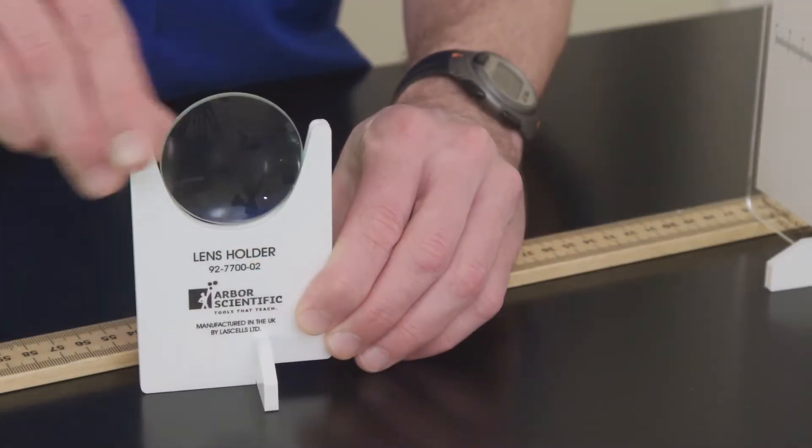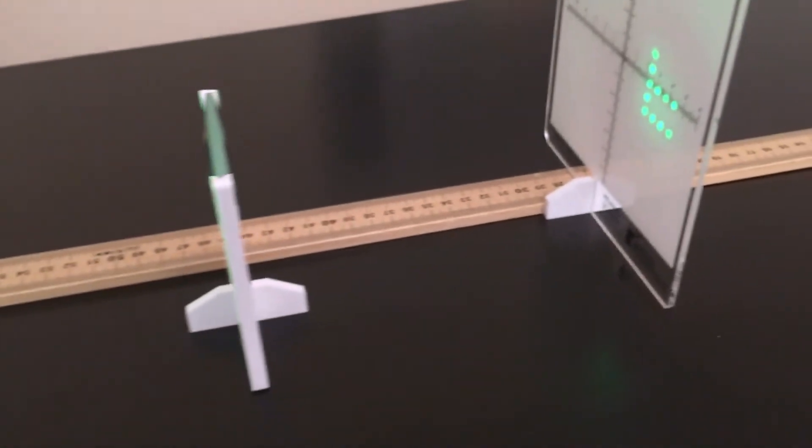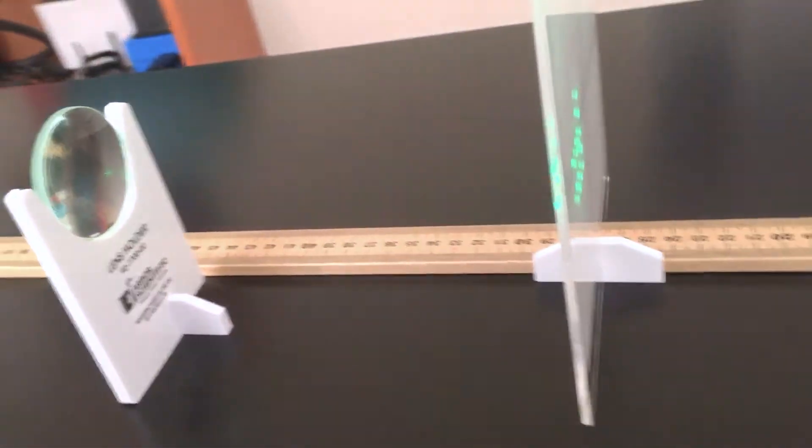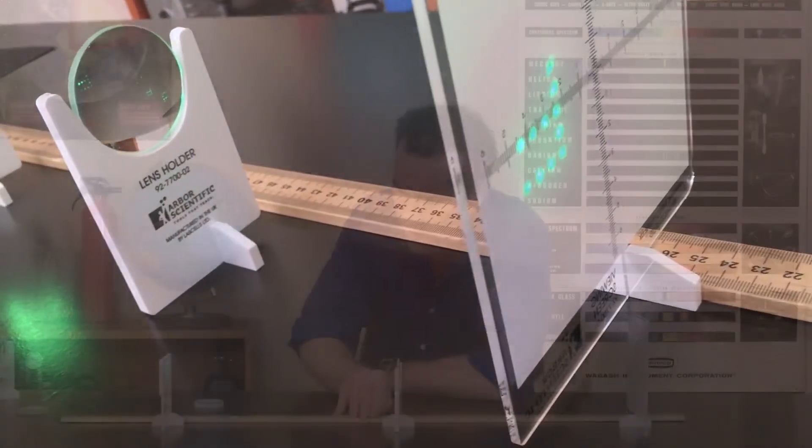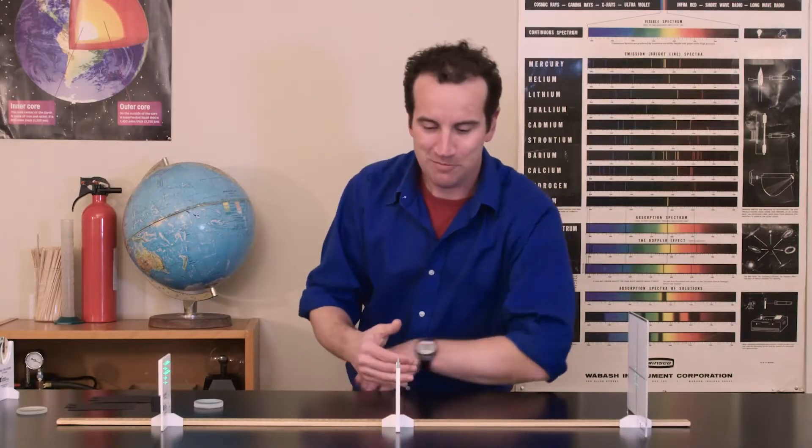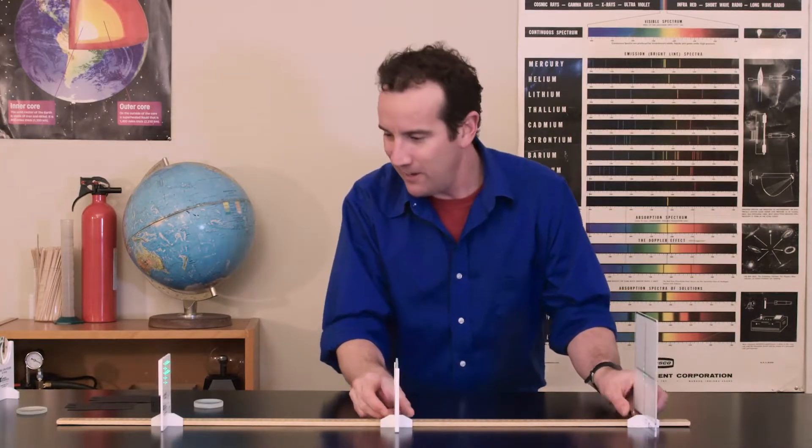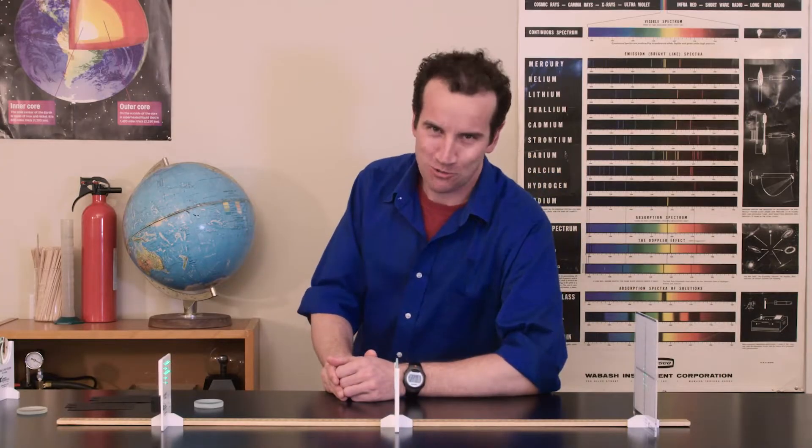There are two convenient lens stands with a semi-transparent viewing screen so everyone in the room can see the projected image. It all fits snugly over a standard classroom meter stick, making it easy to set up, easy to make measurements, and it won't take up a bunch of space in your storage cabinets.